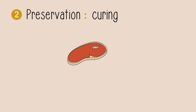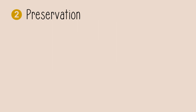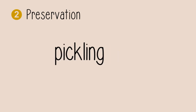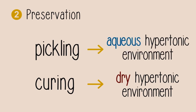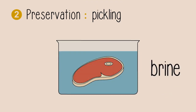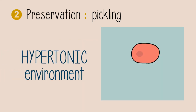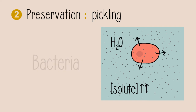Most cured meats are also smoked to further dehydrate the meat and to add flavor. Food can also be preserved by pickling. Curing is done by creating a dry environment, whereas the pickling process is done in an aqueous environment, by placing the food item in brine or salty water. The same idea occurs here: a hypertonic environment is created, osmotic pressure is increased, and this draws water out of bacteria cells, thereby killing them.